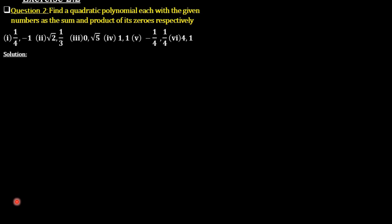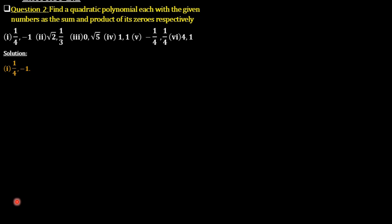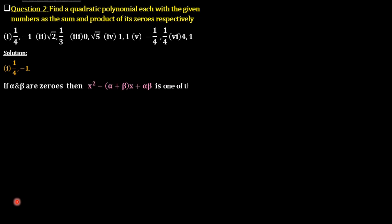Using that, we can find the value. For the first question, the given values are 1/4 and negative 1. If alpha and beta are zeros, then x² minus (alpha plus beta)x plus alpha·beta is one of the polynomials having them as zeros.